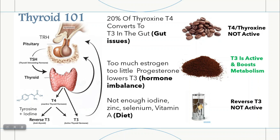Twenty percent of the thyroxine — T4 — gets converted into active T3 in the gut. So if you've got gut issues like SIBO or leaky gut, this could be stealing around one-fifth of your active thyroid hormone. Sex hormones like estrogen and progesterone also matter — too much estrogen and not enough progesterone can affect levels of T3, and we also need progesterone for thyroid receptor sensitivity. So hormones are often all tied in with each other, and estrogen dominance would be something that's going to affect your thyroid function.